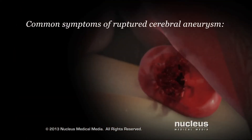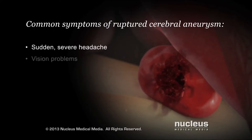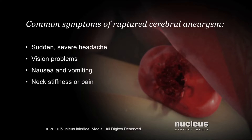Common symptoms of a ruptured cerebral aneurysm include sudden severe headache, sometimes called a thunderclap headache, problems with your vision such as blurred or double vision, nausea and vomiting, a stiff or painful neck, or confusion.